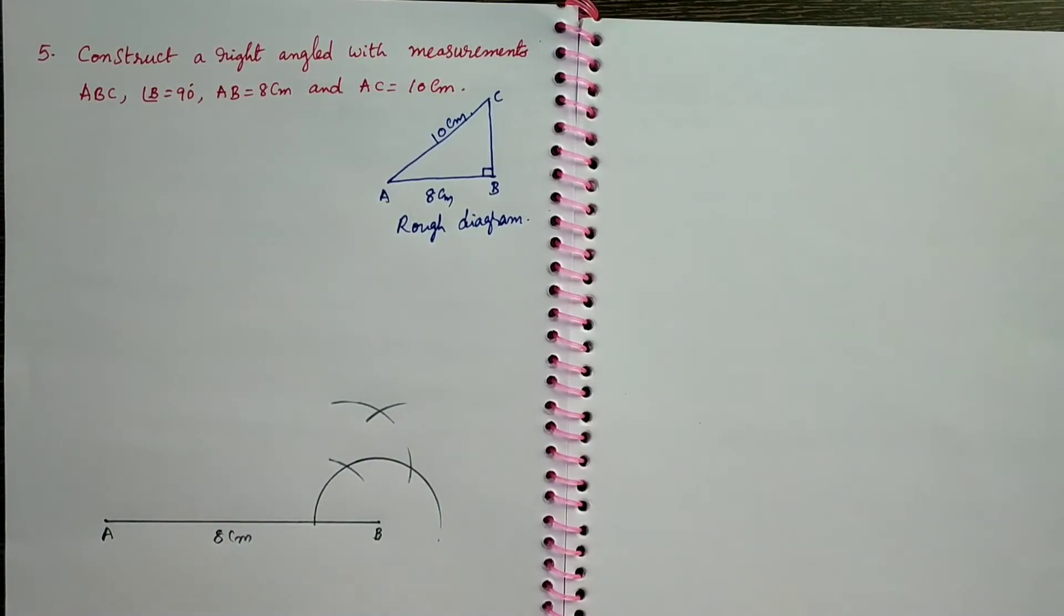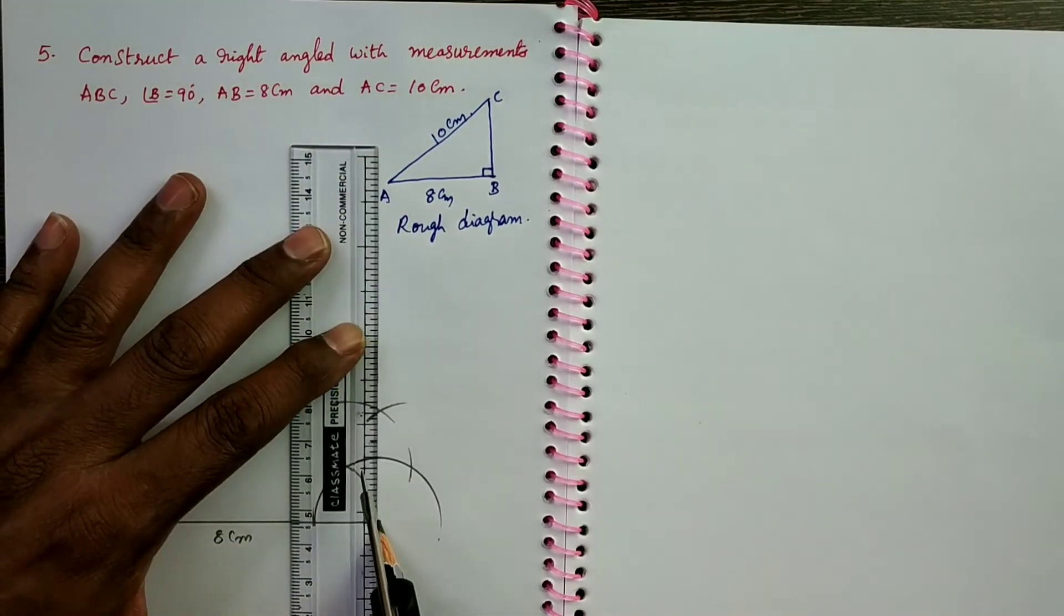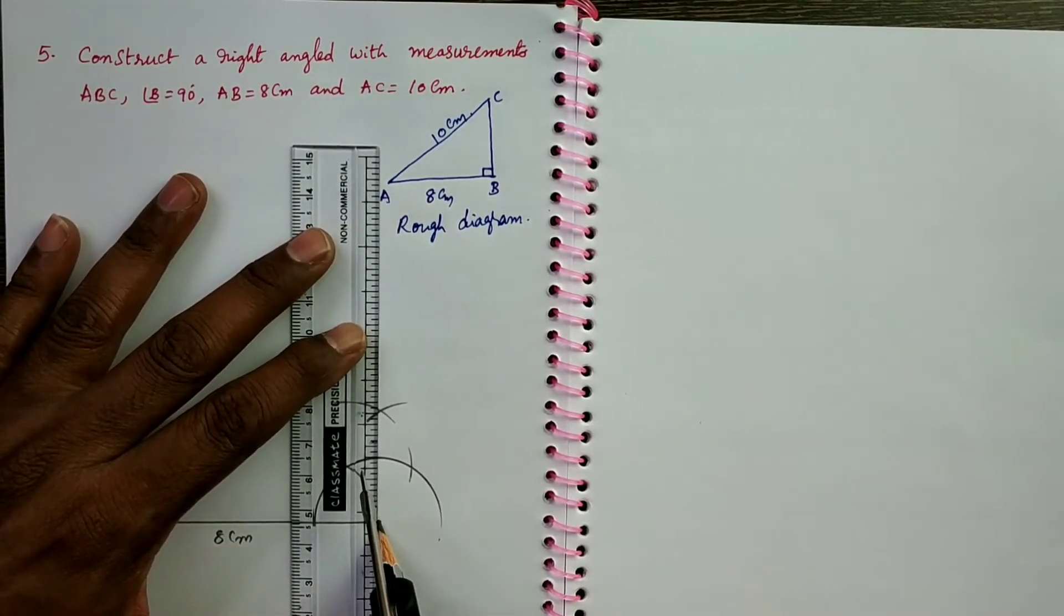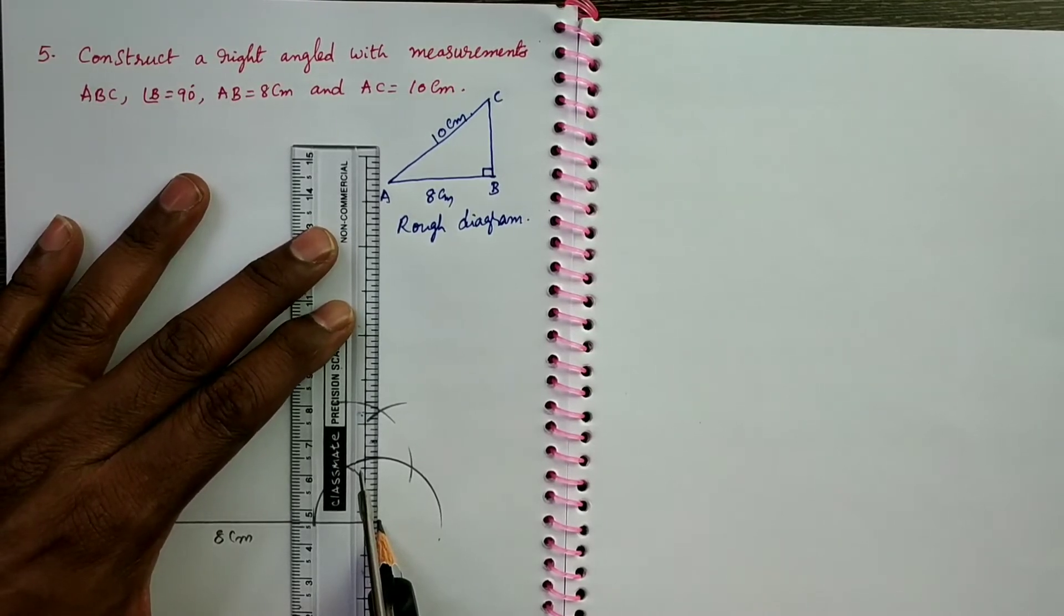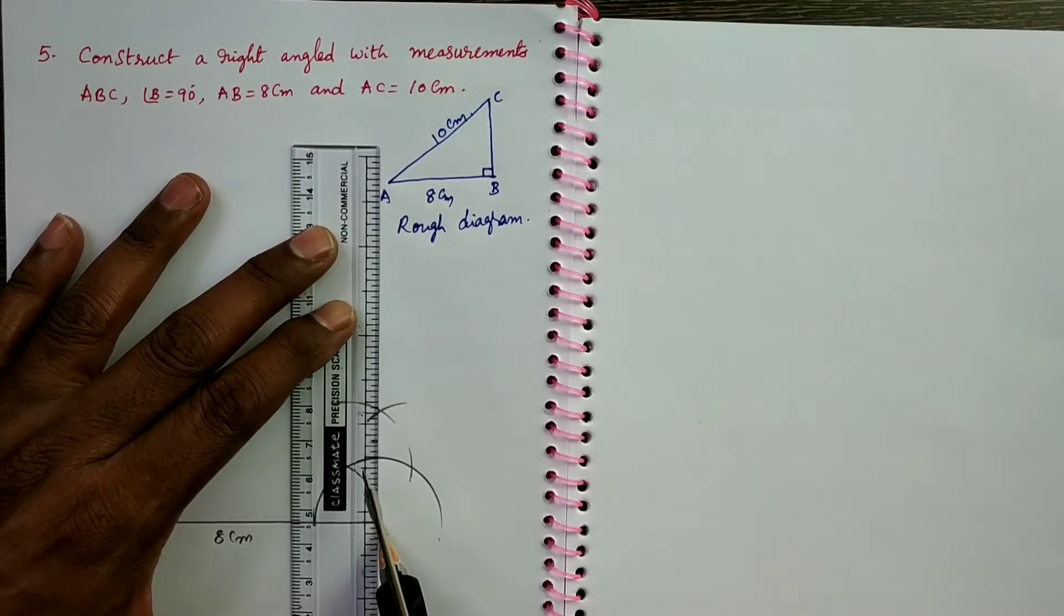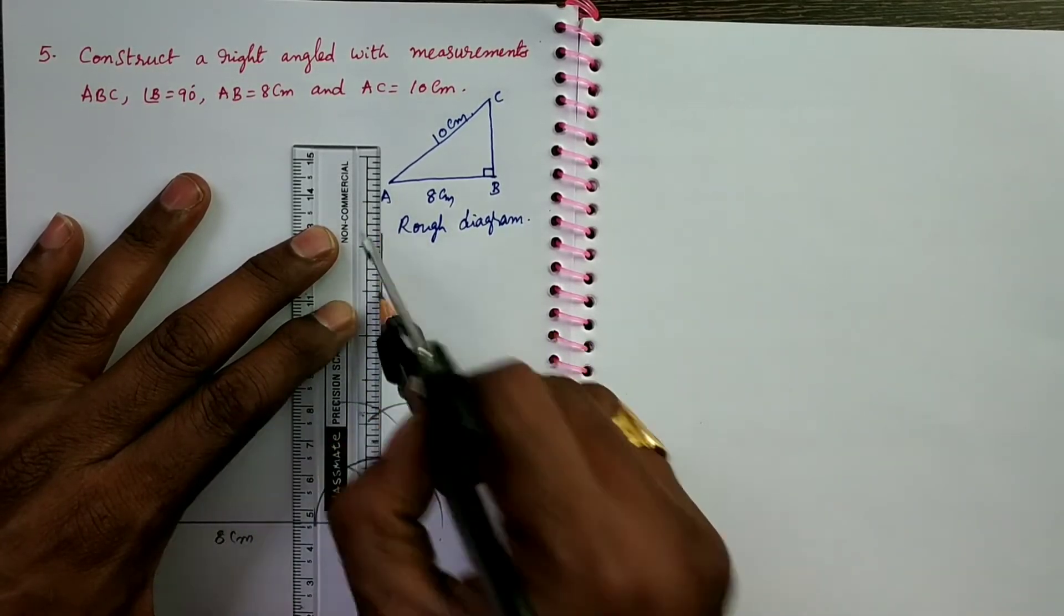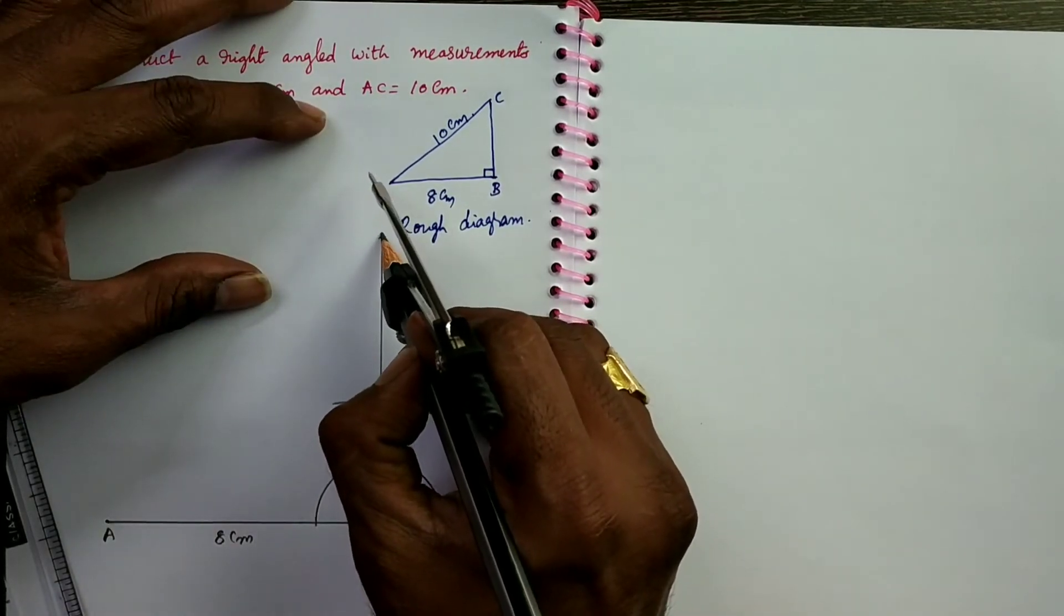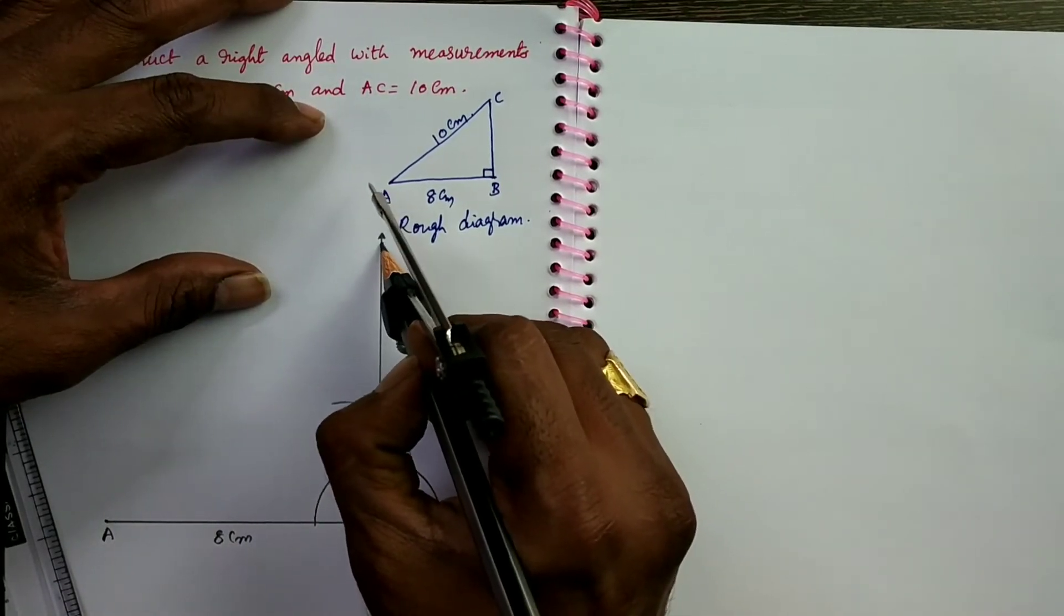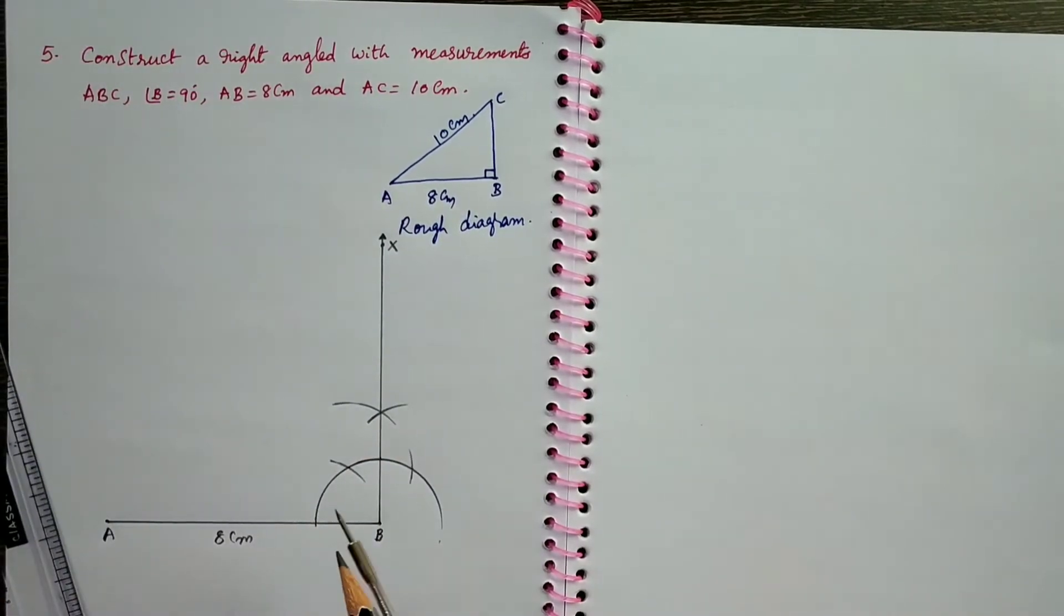Next from B through this intersecting point of two arcs, take it, draw carefully, draw a ray BX. This indicates 90 degrees.